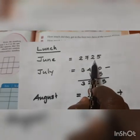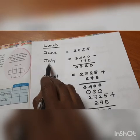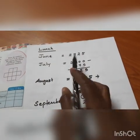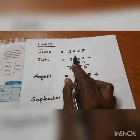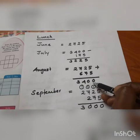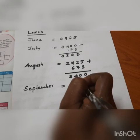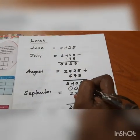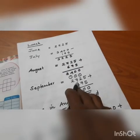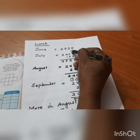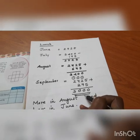June: 2725 rupees. In August, it is 675 more than 2725, that is 3400. July depends upon August — that is 175 less than 3400, which is 3225. In September it depends on June: 2725 plus 275, that is 3000.